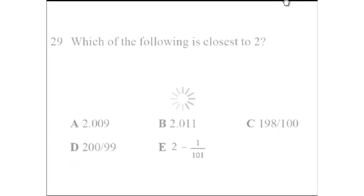Let's do number 29. Which of the following is closest to 2? Now, we know that the difference between each of these answer choices and 2 is what matters. Since we want something that is closest to 2,